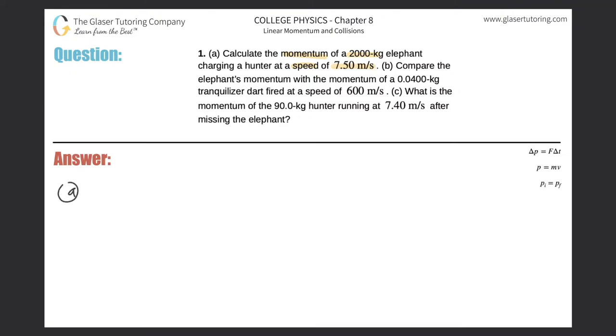All right, so letter A, what they're asking us is to calculate the momentum, and they gave us the mass of the elephant and also its speed. So do we know a formula that relates mass and speed to give us momentum? And of course we do. Right on the right hand side, here is the formula for momentum, where it says that the momentum of an object is equal to the mass of that object multiplied by the velocity of that object.